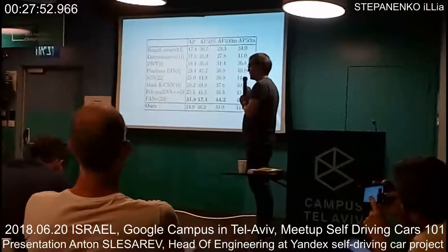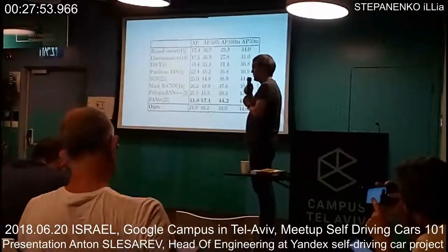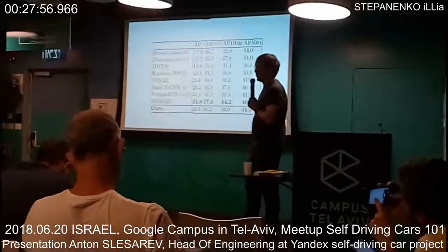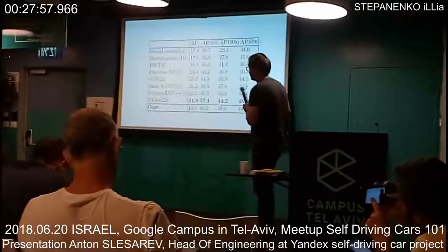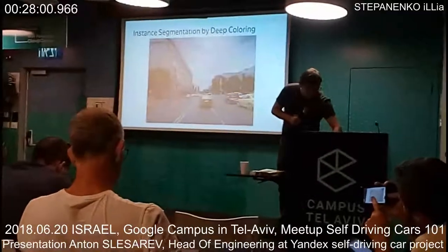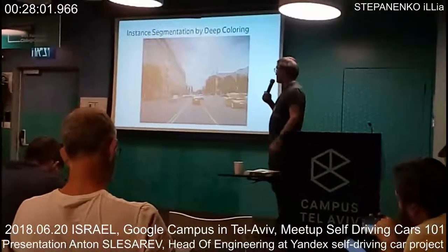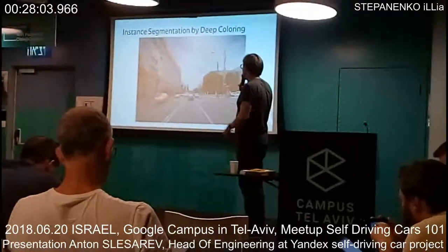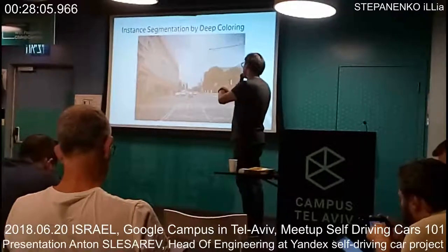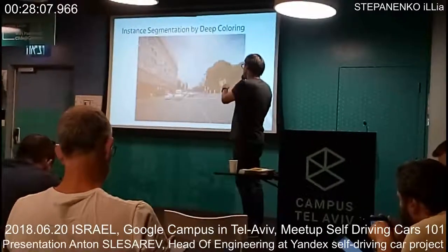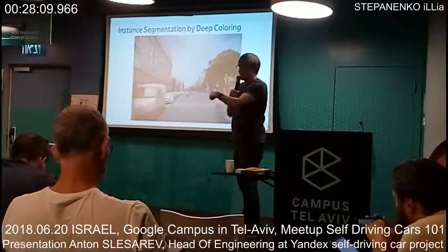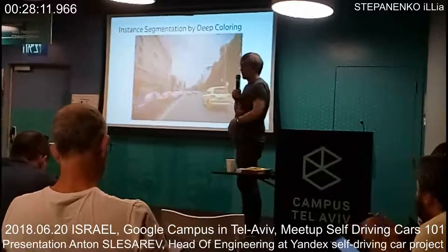It would be really nice to have instance segmentation for self-driving. The quality shown is from our dataset using a network trained on Cityscapes — so there's room for improvement. Colors can change between instances; that's okay because we dynamically change colors during training, but they should differ between different instances.